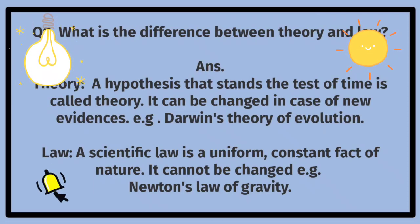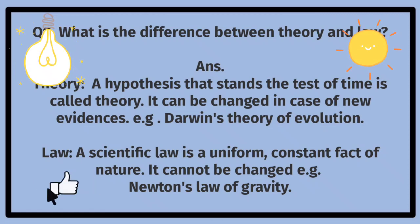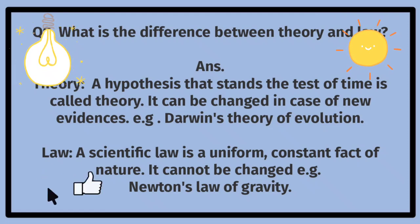Differentiate between theory and law. Theory: A hypothesis that stands the test of time is called theory. It can be changed in case of new evidences. For example, Darwin's theory of evolution. Law: A scientific law is a uniform, constant fact of nature. It cannot be changed. For example, Newton's law of gravity. Nazariya aur qaanoon mein farq karein. Nazariya: ek maafroogah jo waqt ki kasoti par khara ho use nazariya kaha jata hai; naye shawahit ki surat mein use tabdil kiya ja sakta hai. Misal: Darwin ka nazariya irtiqaa. Qaanoon: ek sainci qaanoon fitrat ki yaksaan, mustaqil haqeeqat hai; isse tabdil nahi kiya ja sakta. Misal: Newton ka kashish saql ka qaanoon.